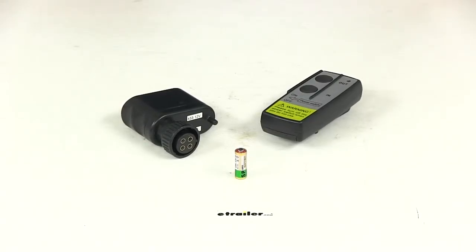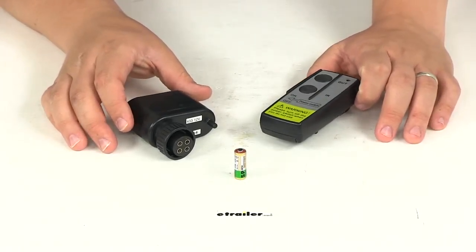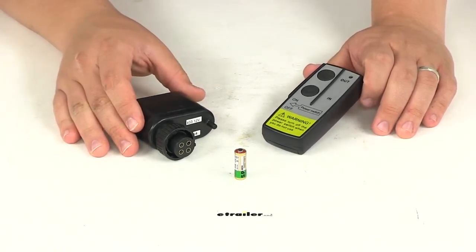Today we're going to be taking a look at part number BDW-20212. This is the Bulldog Wireless Remote Kit. This unit allows you to control the in and out functions of your winch wirelessly within a 45-foot range.